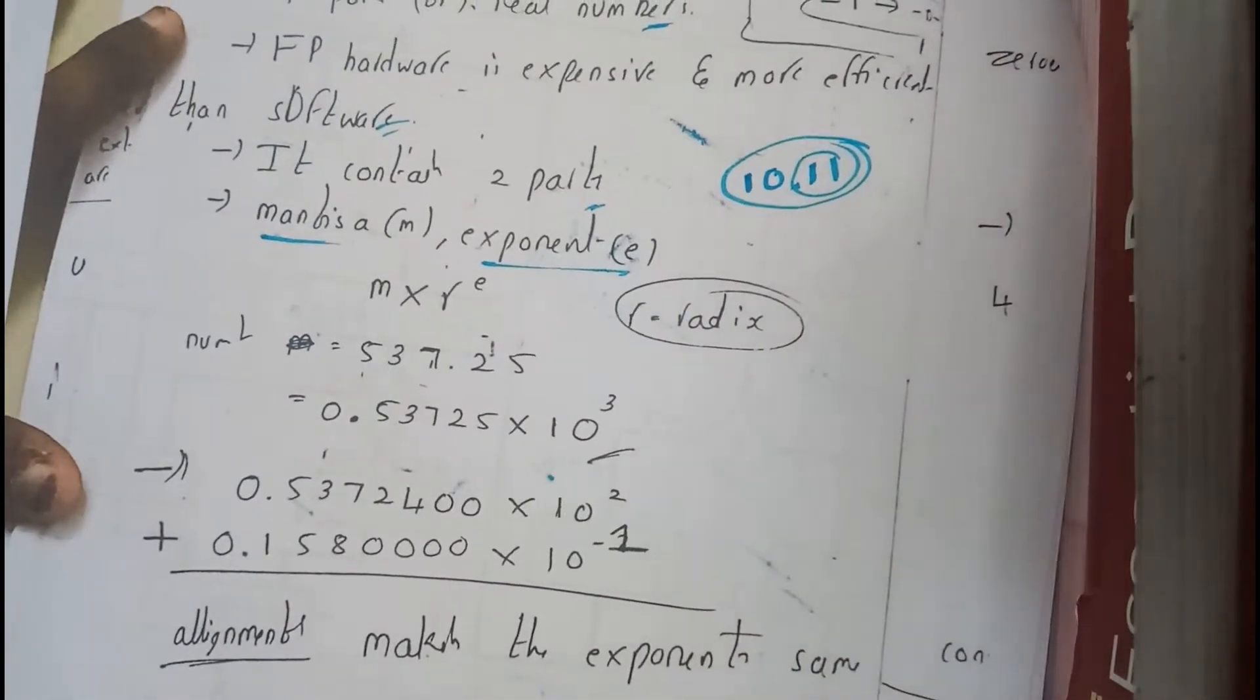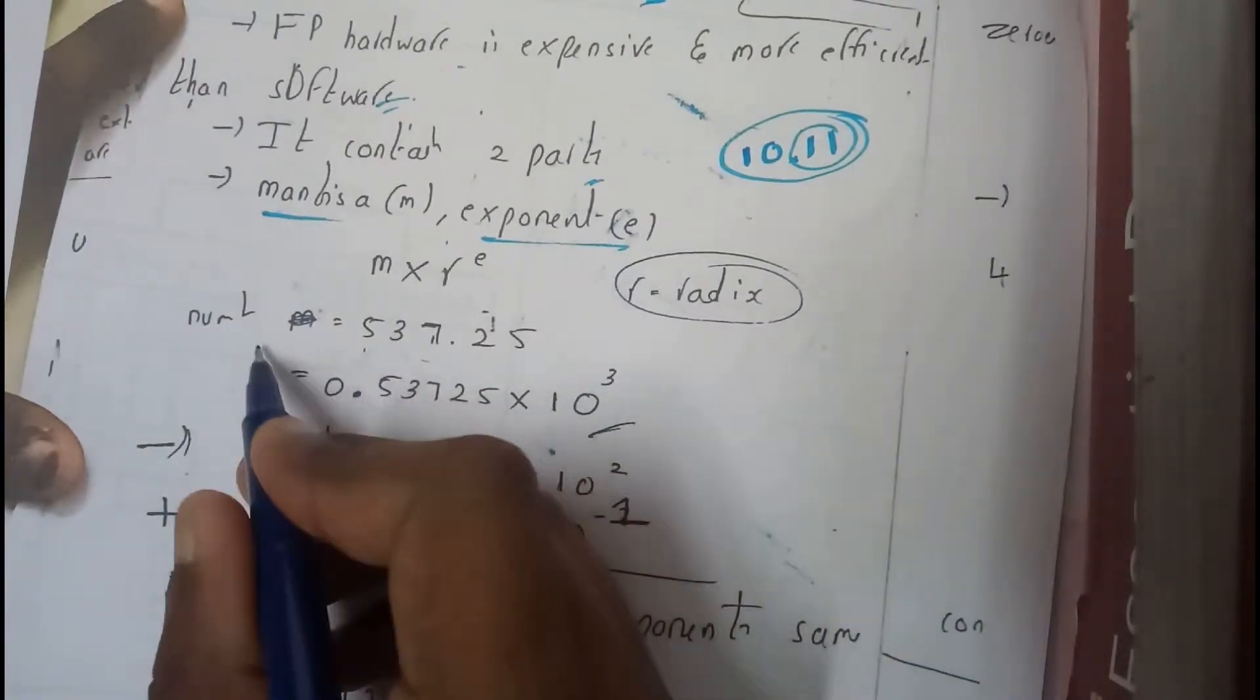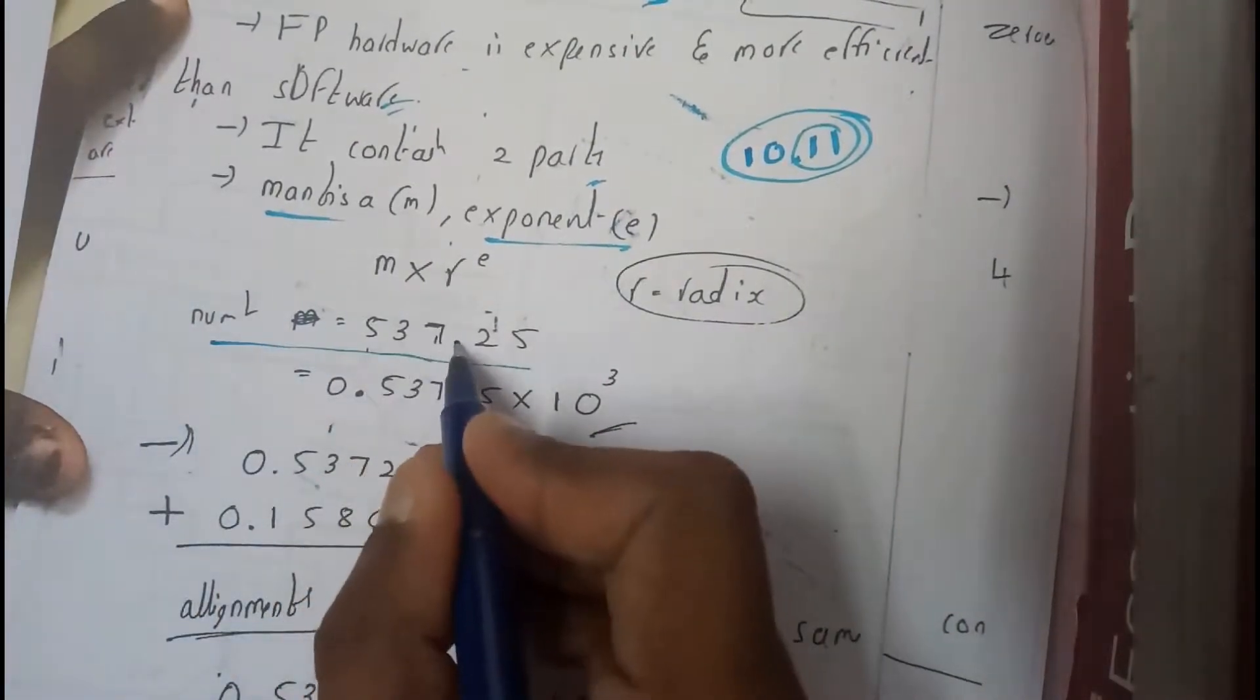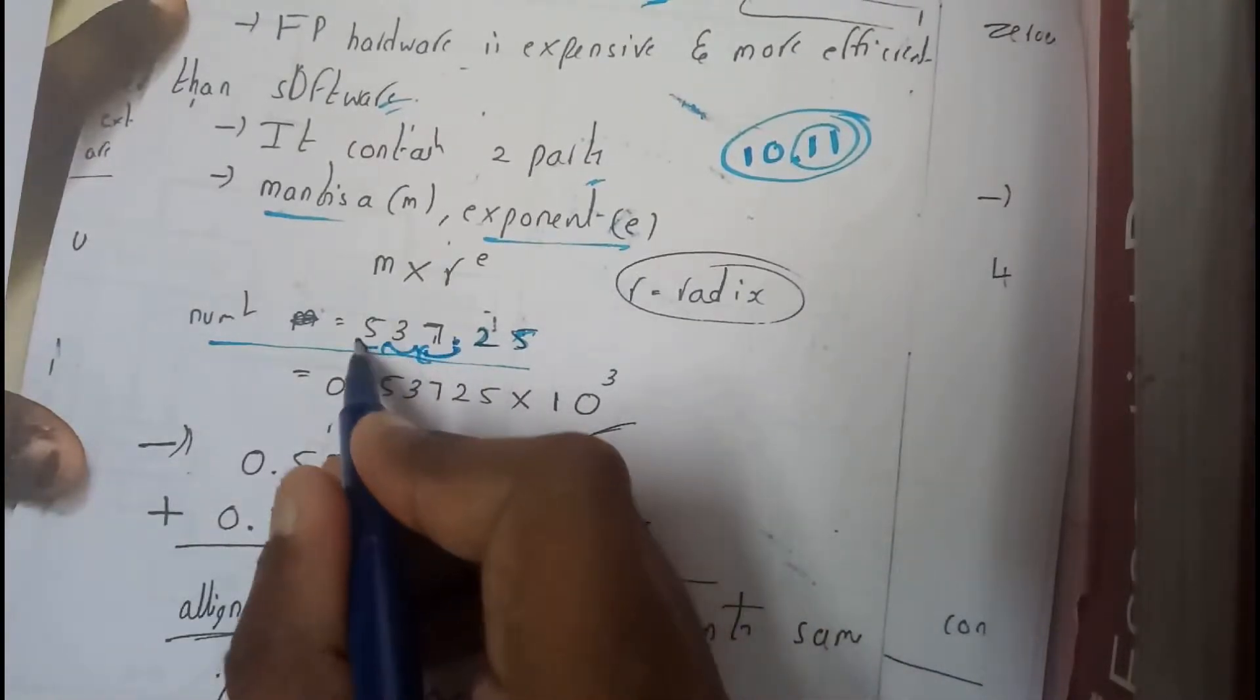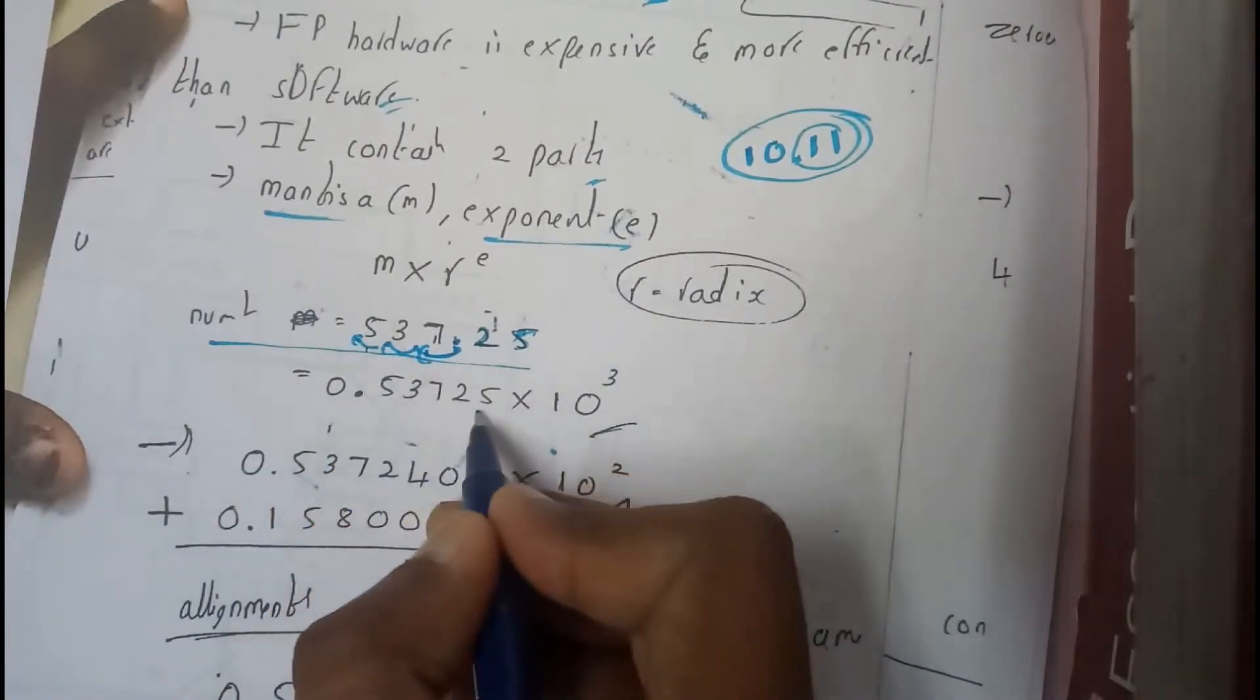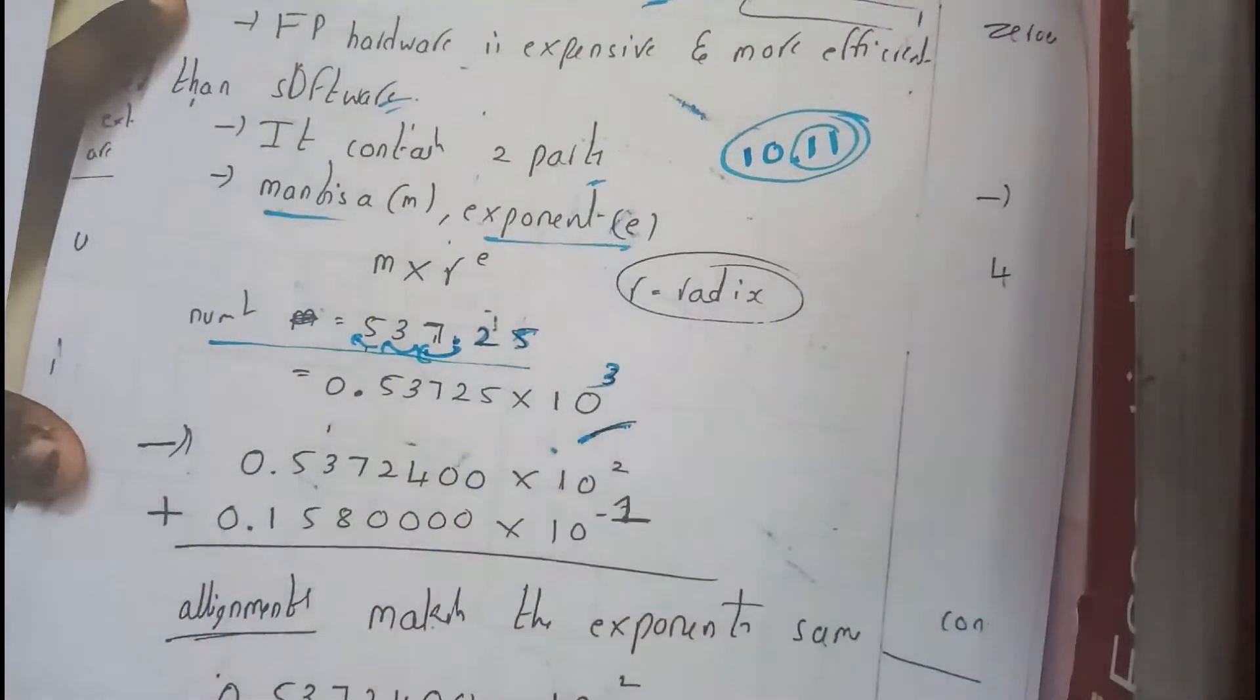If there is a question given that the number is 537.25, slowly you will be moving this point once, twice, thrice. So 0.537 into 10 to the power of 3. That's how we can write it.